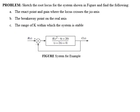For the system given in the figure, we have to sketch the root locus and find the following specifications: the exact point and gain where the root locus crosses the j-omega axis, the breakaway point on the real axis, and the range of gain K within which the closed loop system is stable. The forward path transfer function has two zeros, two poles, and an unknown parameter gain K.